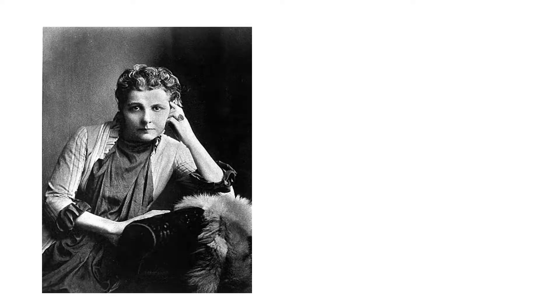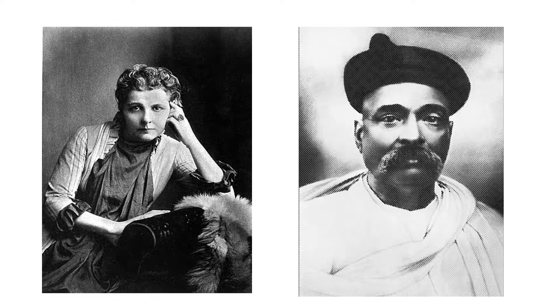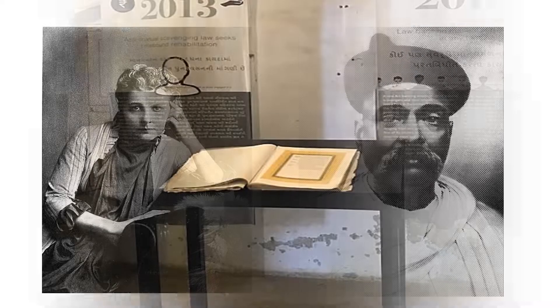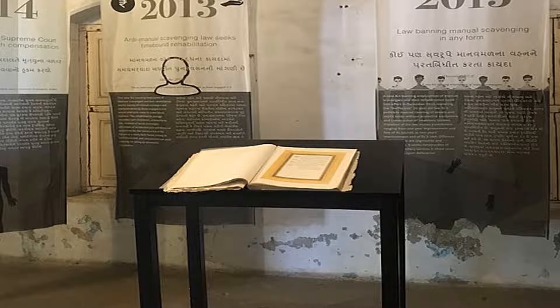The process of evolution of the constitution begins in the year 1895 when freedom fighters like Annie Besant and Lokmanya Tilak put forward a document called the Constitution of India Bill, also known as the Home Rule Bill, envisaging freedom of expression and equality before law.